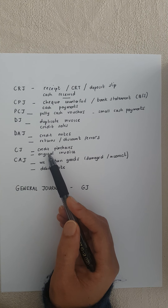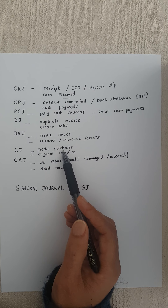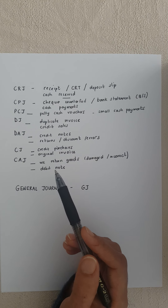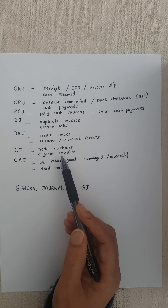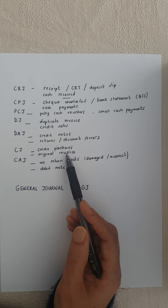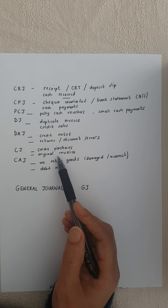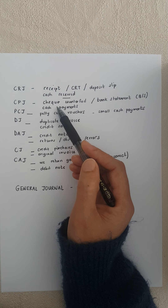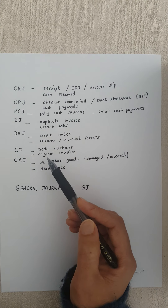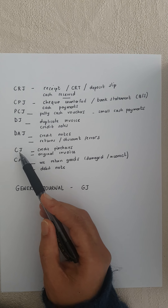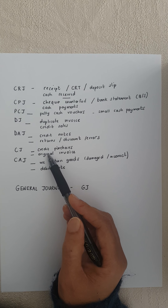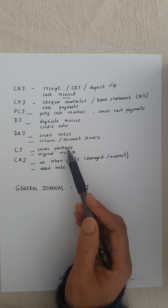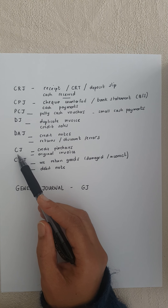Then we have a creditors journal. This is where we go out and make credit purchases — we go into another business and they give us the original invoice. We record all the purchases done on credit, meaning we cannot record it in our CPJ because we haven't paid cash yet. We record it in our creditors journal to show how much money we owe to our creditors.